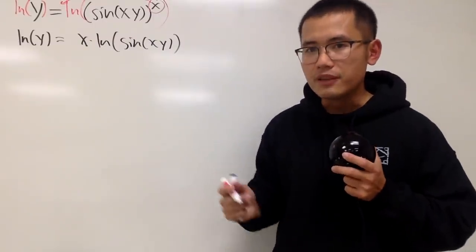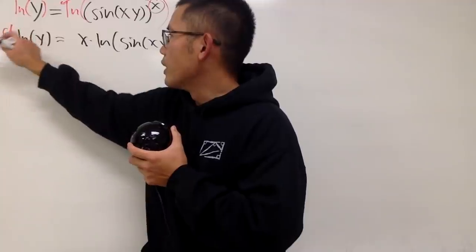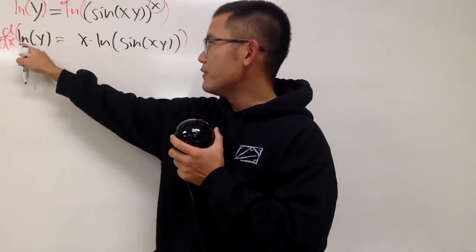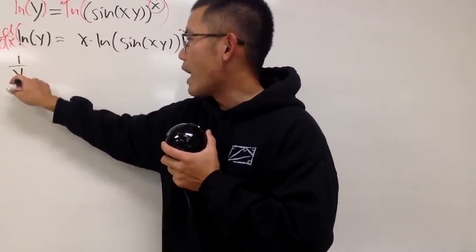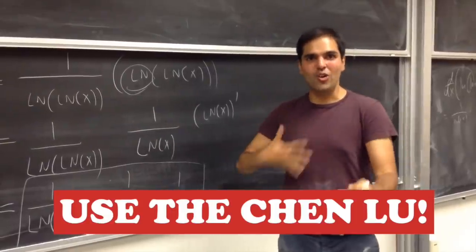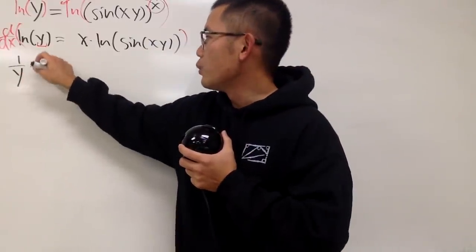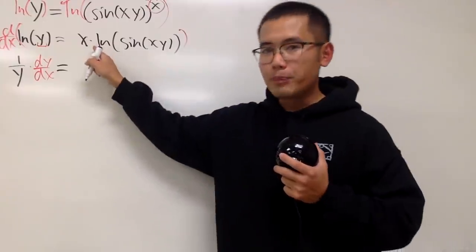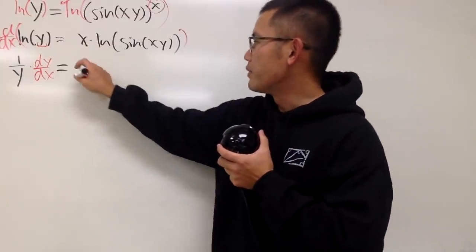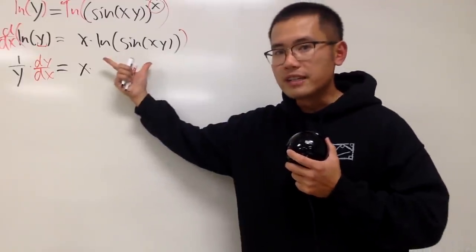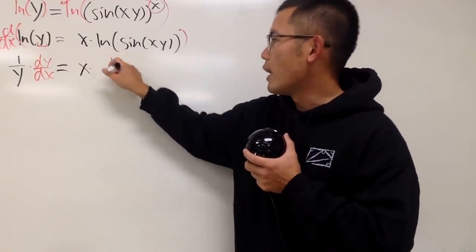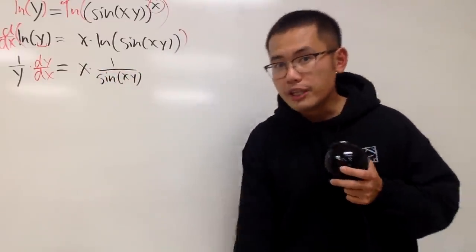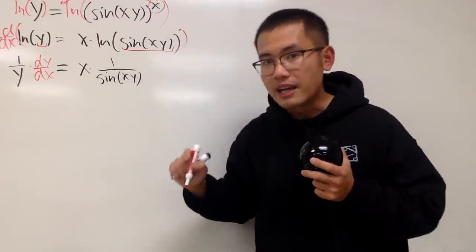Then we can do implicit differentiation to find dy/dx from here. I'll put d/dx for the whole thing. On the left-hand side, the derivative of ln(y): first we get 1 over y, and then use the chain rule — the derivative of y is dy/dx, because we are taking the derivative with respect to x. On the right-hand side, notice that we have a product, so we have to use the product rule. Keep the first function and multiply by the derivative of the second. This is ln of something, so we first get 1 over sine of xy on the bottom, and then use the chain rule again.